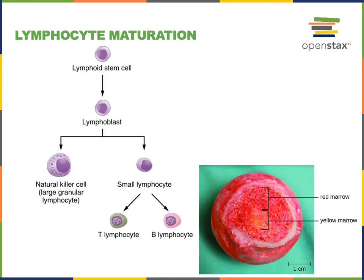All lymphocytes are produced by the mechanism of hematopoiesis within red bone marrow. While natural killer cells are a type of lymphocyte important for innate immunity, T lymphocytes and B lymphocytes are important for the adaptive immunity. T lymphocytes leave the red bone marrow as immature T lymphocytes and migrate to the thymus to complete positive and negative selection to produce immunocompetent T lymphocytes, while B lymphocytes complete maturation within red bone marrow.